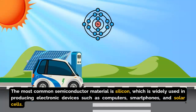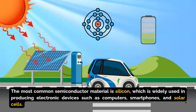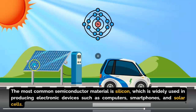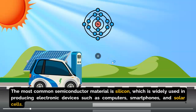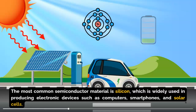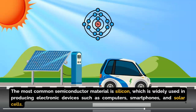The most common semiconductor material is silicon, which is widely used in producing electronic devices such as computers, smartphones, and solar cells. Solar cells specifically absorb sunlight and convert it into electricity. You can use this electric current to meet your energy needs, like running your electrical appliances, electric vehicles, and much more.